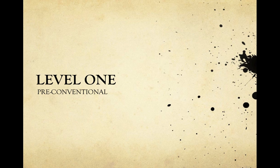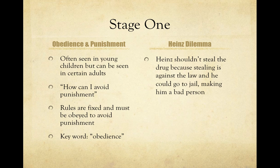The first level is pre-conventional. Stage one is called obedience and punishment, and you're going to see this most often in young children. The key question asked of yourself at this stage is: how can I avoid punishment? The view is that rules are fixed and must be obeyed to avoid punishment. This is why young children obey their parents — they see what happens when they do something wrong, and they do everything they can to avoid punishment. This is also why young children will lie, not fully understanding it's a lie — they just don't want to get in trouble.